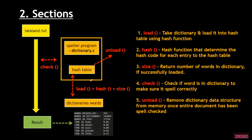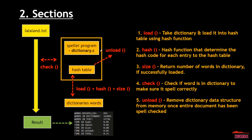There are five functions here and they each have different roles. Load, hash, and size are the ones that interact between the dictionary words and the hash table. The check function is where the words interact with the lalaland text and the dictionary words already inside our hash tables. Then at last, we have to unload all the hash tables, which frees the memory of the dictionary words from our program.